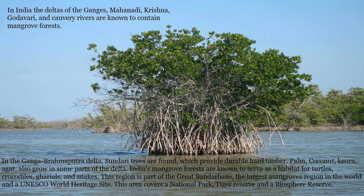In India, the deltas of the Ganges, Mahanadi, Krishna, Godavari, and Kaveri rivers are known to contain mangrove forests. In the Ganga-Brahmaputra delta, Sundari trees are found, which provide durable hard timber. Palm, coconut, caura, and agar also grow in some parts of the delta. India's mangrove forests are known to serve as a habitat for turtles, crocodiles, gharials, and snakes.